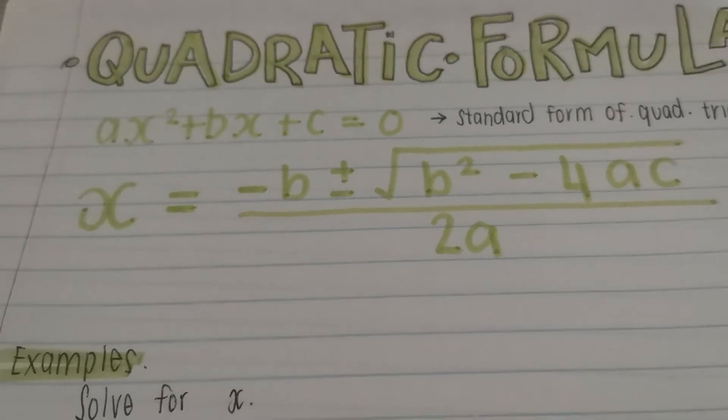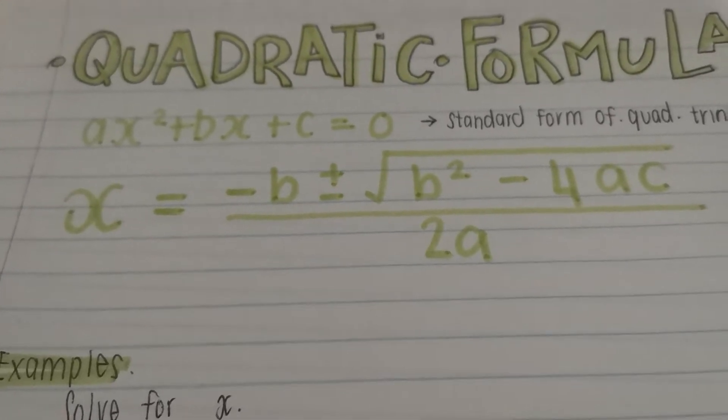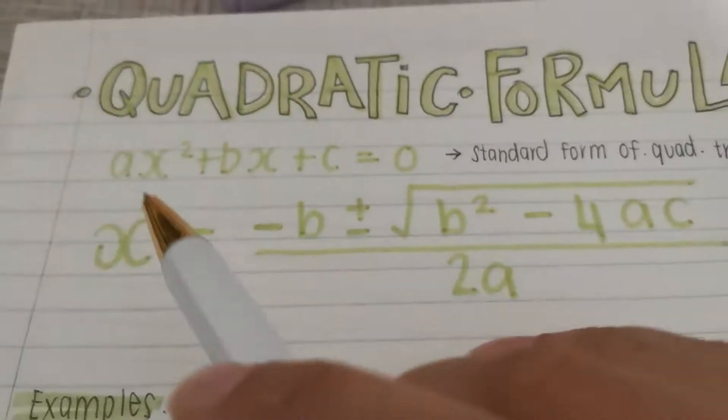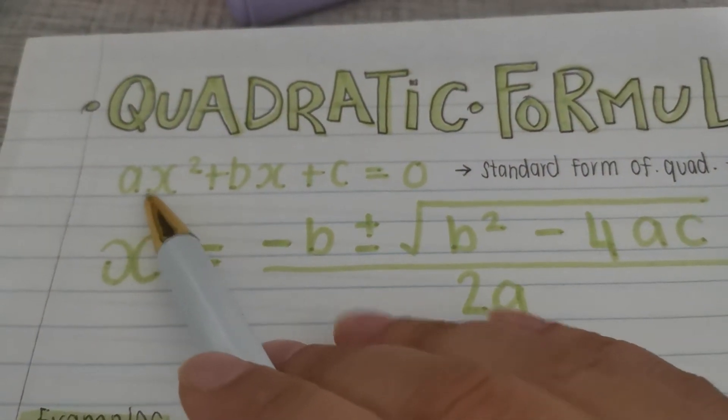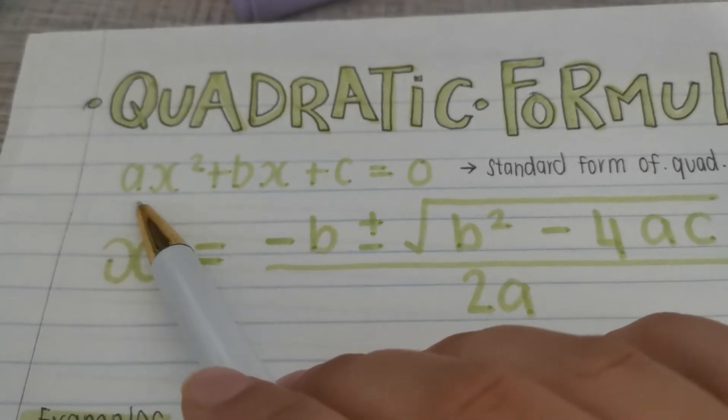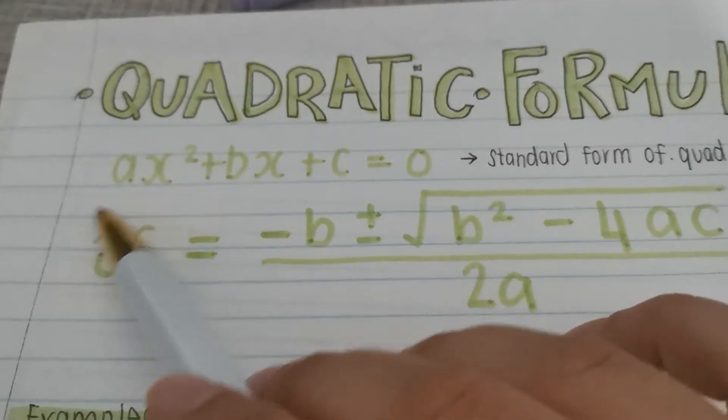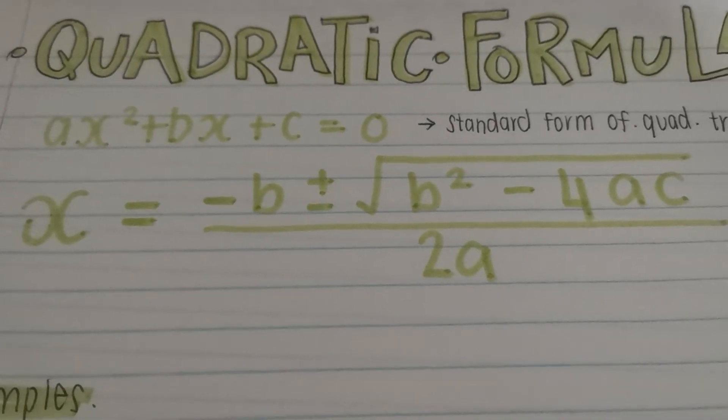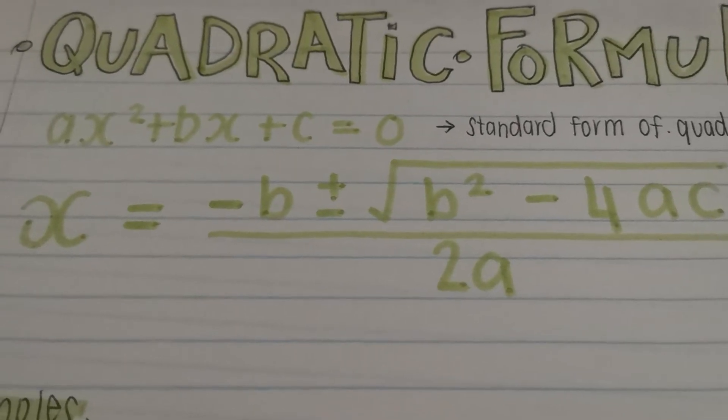In grade 10, we went a little farther. Same concept, you're factorizing by putting it into two brackets. This time, we included a value that wasn't 1. So in grade 9, it was just a value of 1 in this place of A. In grade 10, we made it more difficult. We said, what if it's 2 or 3? Now find the factors for us.